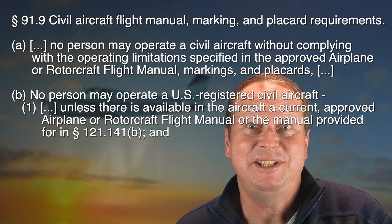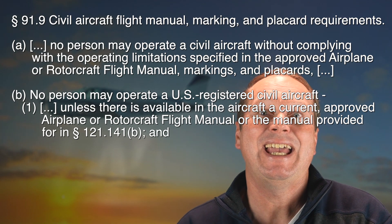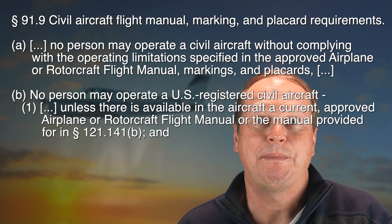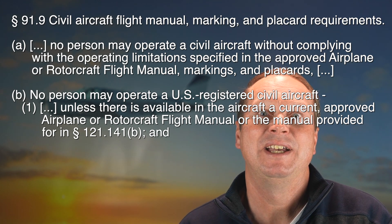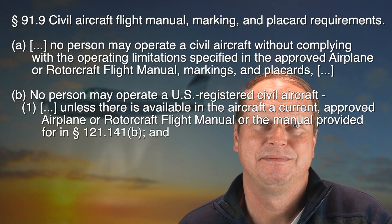What do I mean by special? If you look at the regulations, you'll see that Part 91 — that's the one with the General Operating and Flight Rules — requires the AFM to be available in the aircraft when it's operated, and it requires that pilots comply with the Limitations section of the AFM and with markings and placards. Interestingly, it doesn't say you have to comply with anything else in the book. It just talks about limitations.